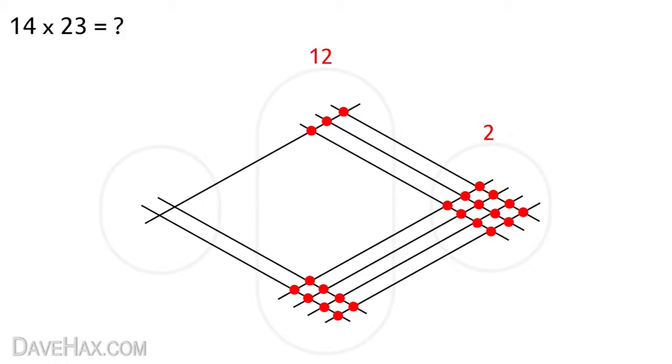Leave the last digit where it is, carry the first digit over to the next zone and add it to the number of dots in this zone. In this case 2 dots, giving us a total of 3. And that gives us our answer. 3 2 2. 14 multiplied by 23 is 322.